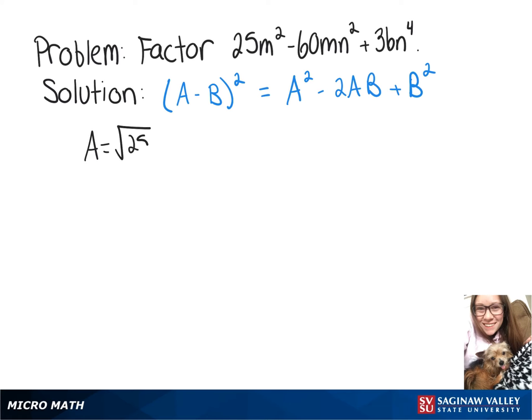If this formula worked, then our A would be equal to the square root of our first term, which is 5m.